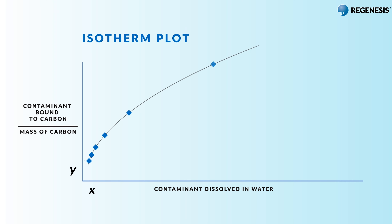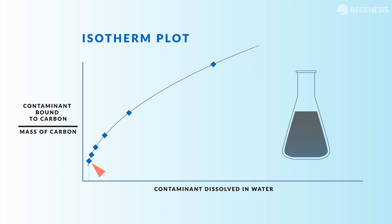The isotherm can be used to predict the relative concentrations of contaminant adsorbed to the carbon and that remaining dissolved in the water. What is important to note is that at low concentrations of contaminant, in the presence of high amounts of activated carbon, we remain very far to the left on the isotherm plot, meaning that most of the contaminant is bound to the carbon, leaving relatively little contaminant remaining in the water.